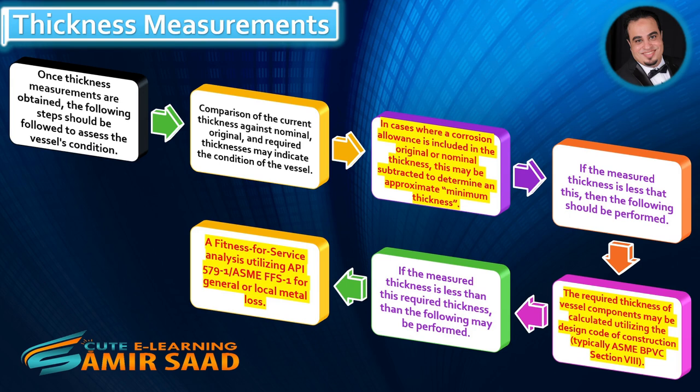If the measured thickness is less than the minimum, the required thickness of vessel components may be calculated utilizing the design code of construction, typically ASME-BPVC Section 8. If the measured thickness is less than this required thickness, a fitness for service analysis utilizing API 579, ASME-FFS, for general or local metal loss may be performed.